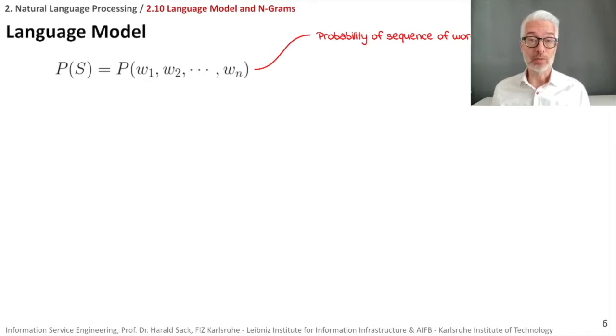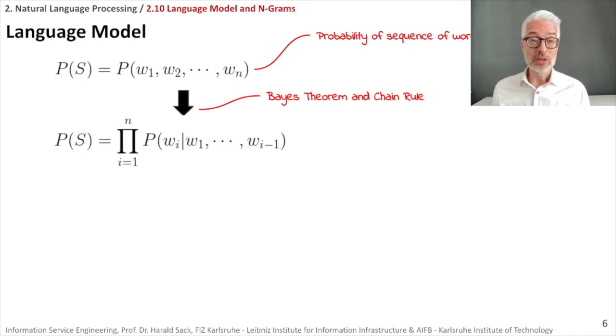So what did we do so far? We tried to define a statistical language model, which means we want to compute the probability of a sequence of words. With the help of the base theorem and the chain rule, we are able to determine the probability of a sequence of words based on the occurrence of each single word dependent on the history of the preceding words.